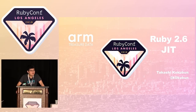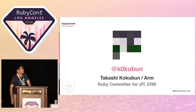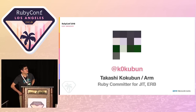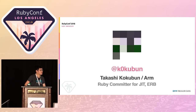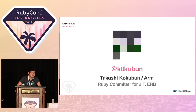I'll talk about the JIT Compiler of Ruby 2.6. I'm Kokubun, from ARM — my company was previously Treasure Data, which was acquired by ARM this year. I'm a Ruby committer: I started by maintaining the ERB template engine, and now I'm mainly maintaining the JIT Compiler.